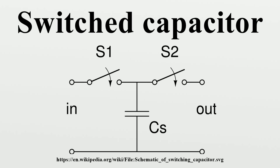The SC resistor is used as a replacement for simple resistors in integrated circuits because it is easier to fabricate reliably with a wide range of values. It also has the benefit that its value can be adjusted by changing the switching frequency.